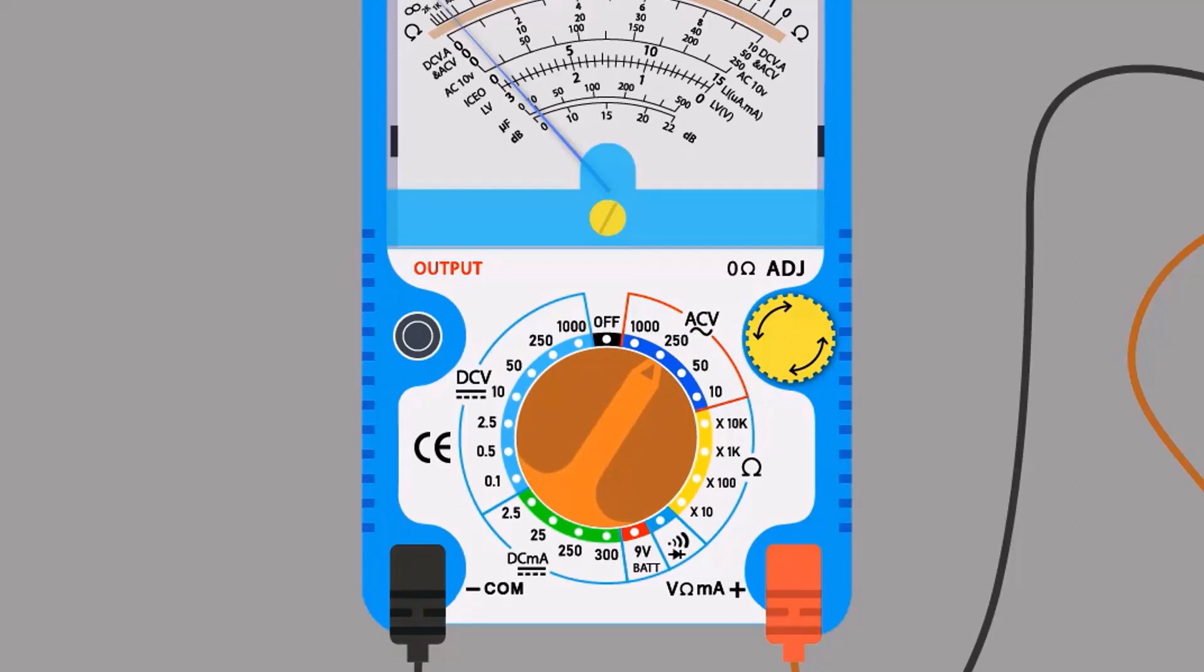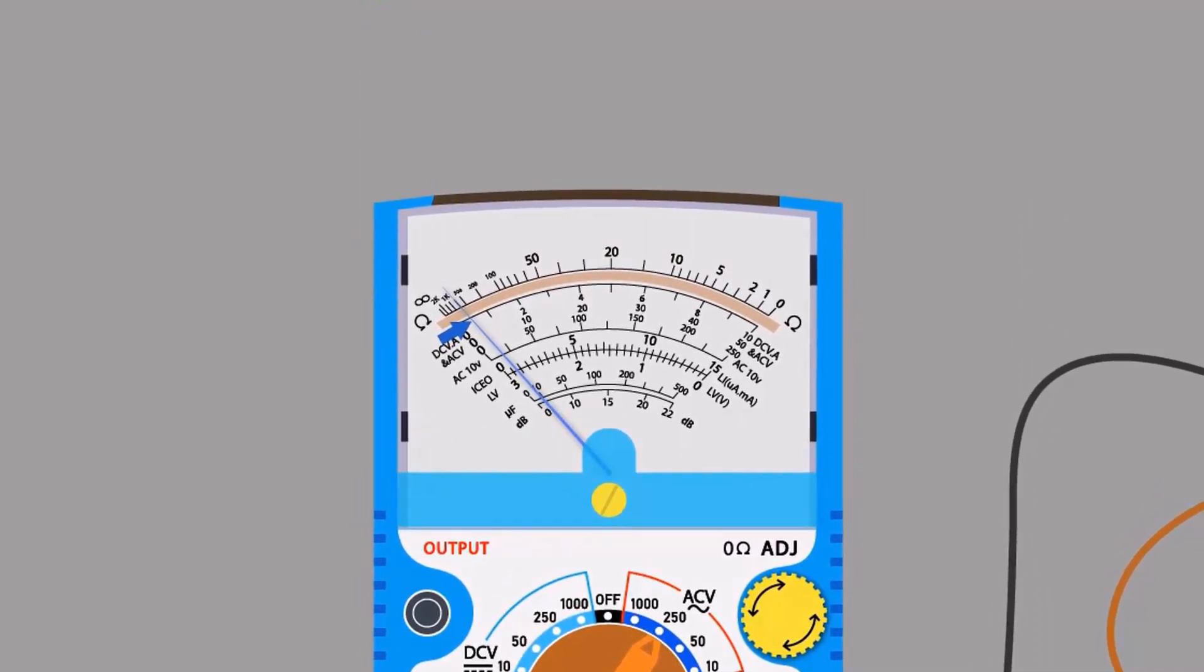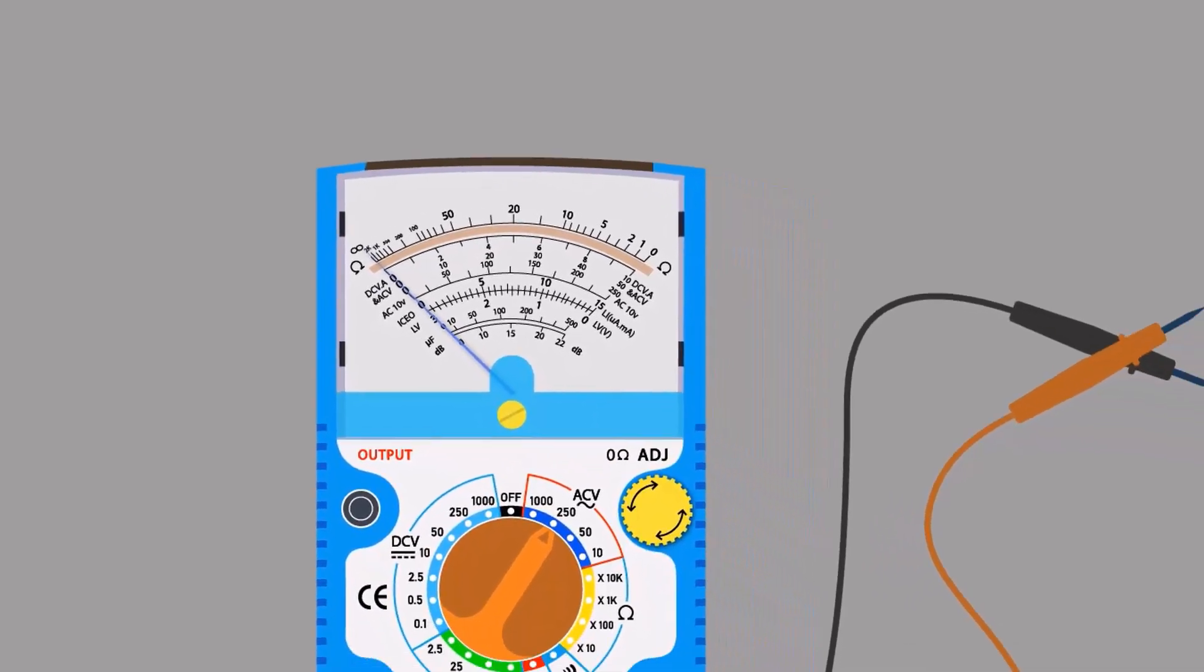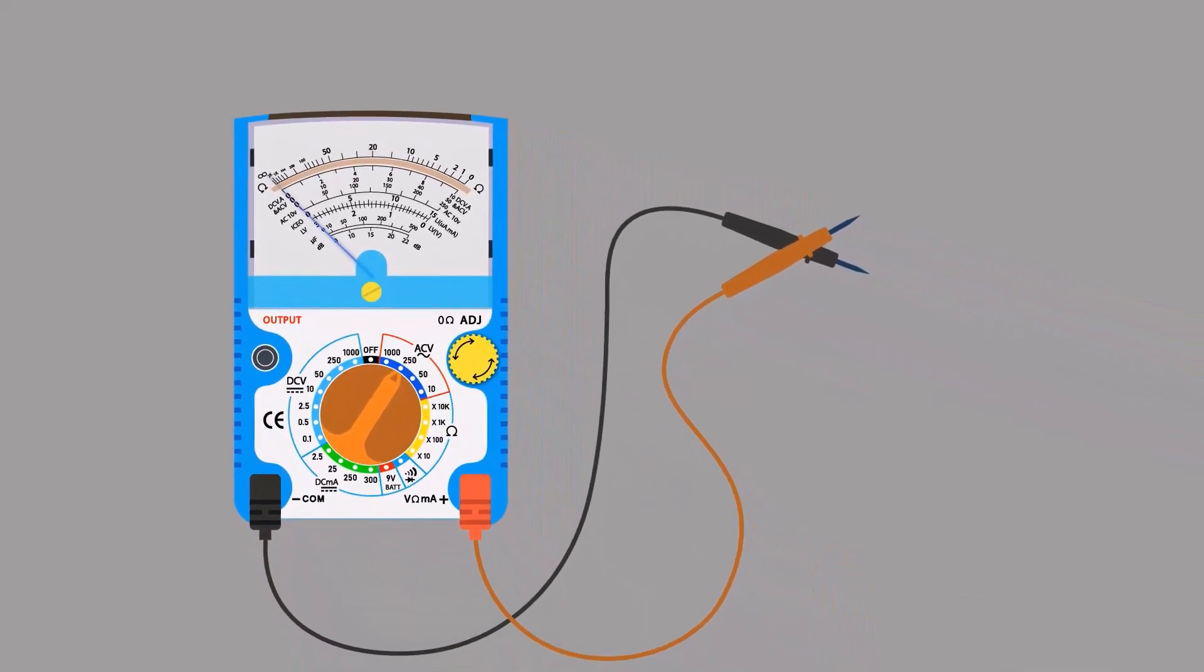Now, it's time to calibrate the multimeter. If you see the multimeter needle, it is not at zero. In order to move it to zero, rotate zero ohmic knob clockwise or anti-clockwise with the help of a screwdriver. Now our multimeter is calibrated and ready to take reading.